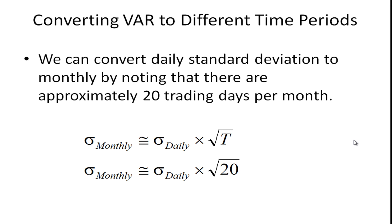If you happen to have information from different periods you can convert them. For example you can convert a daily standard deviation to a monthly standard deviation by using the formula that the monthly standard deviation is approximately equal to the daily standard deviation times the square root of T. And in this case we note that there are approximately 20 trading days per month. So the adjustment would be times the square root of 20. If you wanted to take daily and compute it to annual you would multiply by the square root of 250 because there are about 250 trading days in a year. If you had monthly data and you wanted to convert it to annual the T would be 12 because there are 12 months in a year.